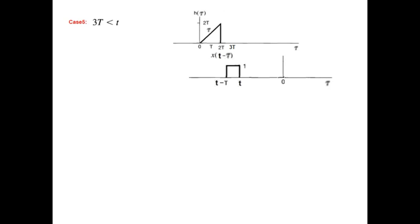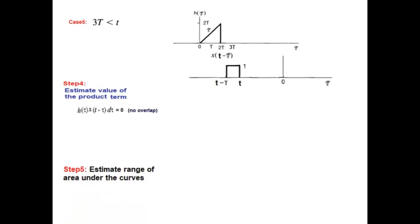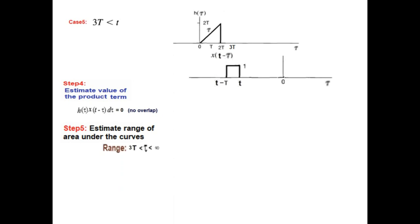One more pull: the moment t goes beyond 3T, there is no overlap. I have some doubt whether to write the range as 3T to infinity or just note that there is no range, but since the multiplication is 0, the output will be 0.